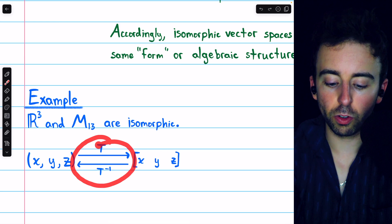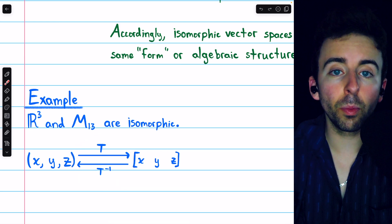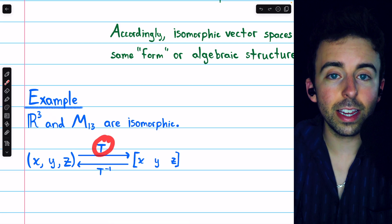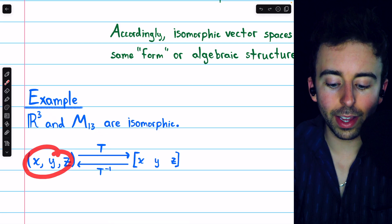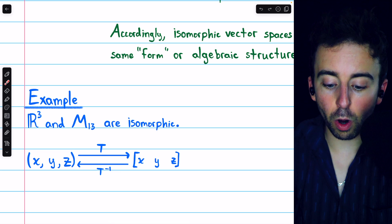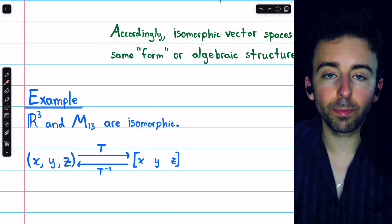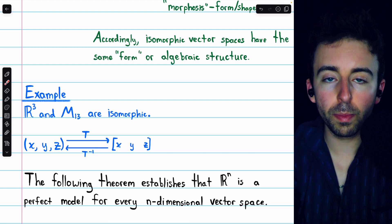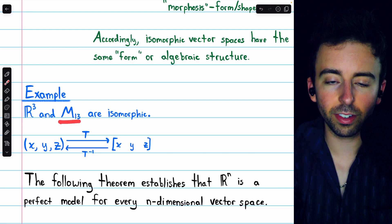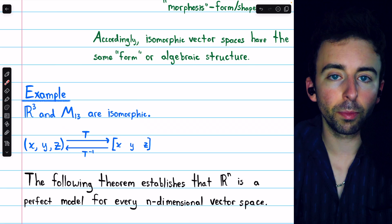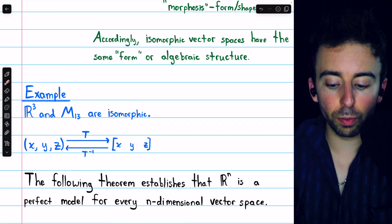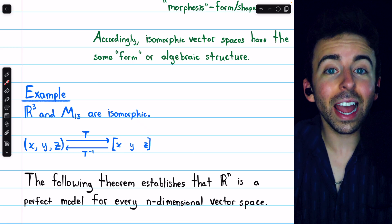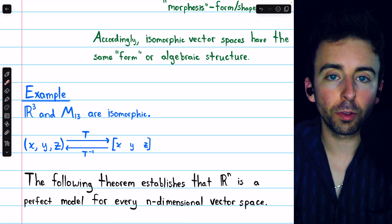These two vector spaces are isomorphic, and the transformation shown here, as well as its inverse, are isomorphisms from one vector space to the other. The isomorphism T takes an ordered triple (x, y, z) and sends it to the row matrix with three entries x, y, and z. This is just one example of R³ being a perfect model for some other three-dimensional vector space, but the next theorem we'll prove will establish that Rn is actually a perfect model for every n-dimensional vector space.